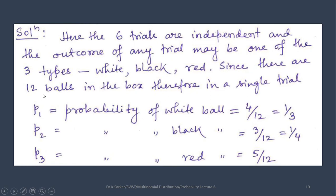Since there are 12 balls in the box, therefore in a single trial, p1 is the probability of white ball, 4 by 12, that is 1 by 3. p2 is the probability of black ball, 3 by 12, that is 1 by 4. p3 is the probability of red ball, that is 5 by 12.